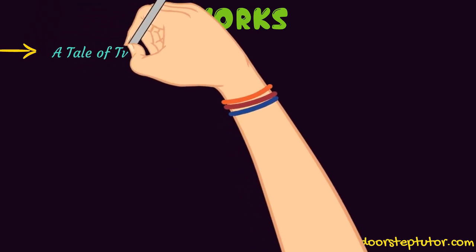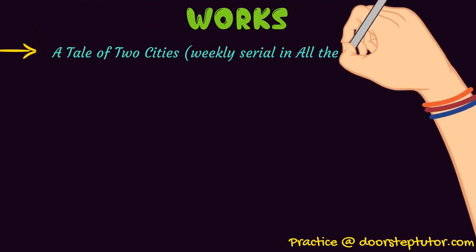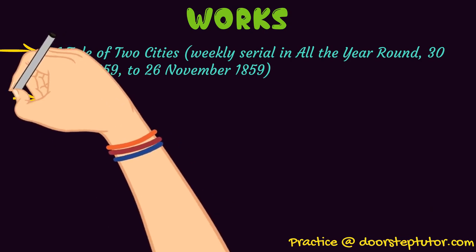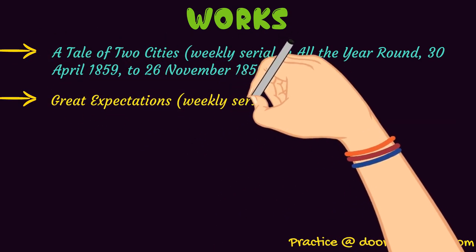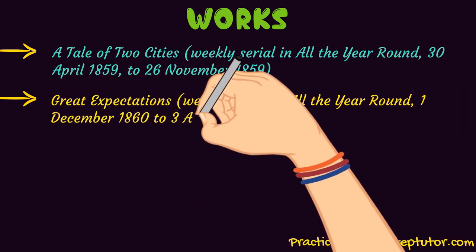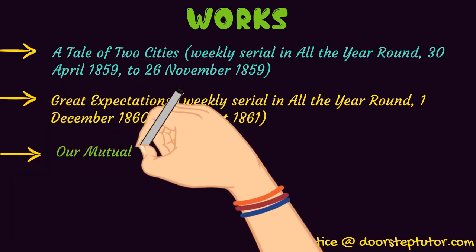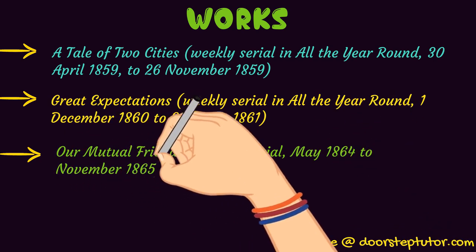Next is A Tale of Two Cities, which was a weekly serial in All the Year Round, published from 30th April 1859 to 26th November 1859. The Great Expectations was also a weekly serial in All the Year Round, from 1st December 1860 to 3rd August 1861. It is essential to remember the magazine names, as you will be asked in which magazine Great Expectations was published. Our Mutual Friend was a monthly serial from May 1864 to November 1865.